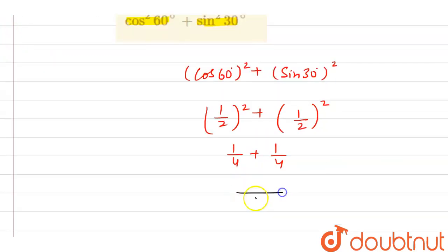Now here if we add them, then here at denominator we can write the LCM is 4, and here at numerator it is 2. So we can write here this gets cancelled at 1 and this gets cancelled at 2 by 2.